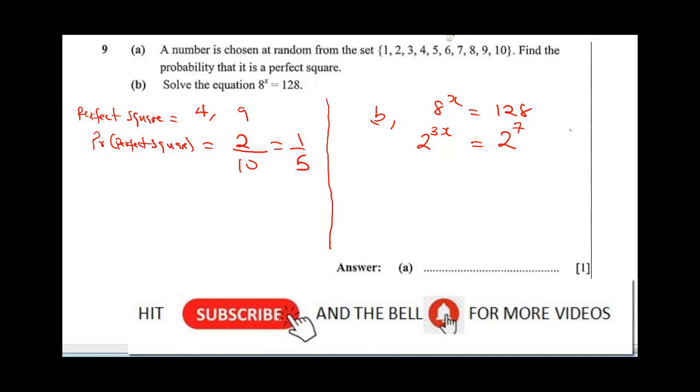2 raised to power 6 is 64, 2 raised to power 7 will give us 128. So now we know that our bases are equal, so we can now say 3x equals 7 by cancelling out our bases.